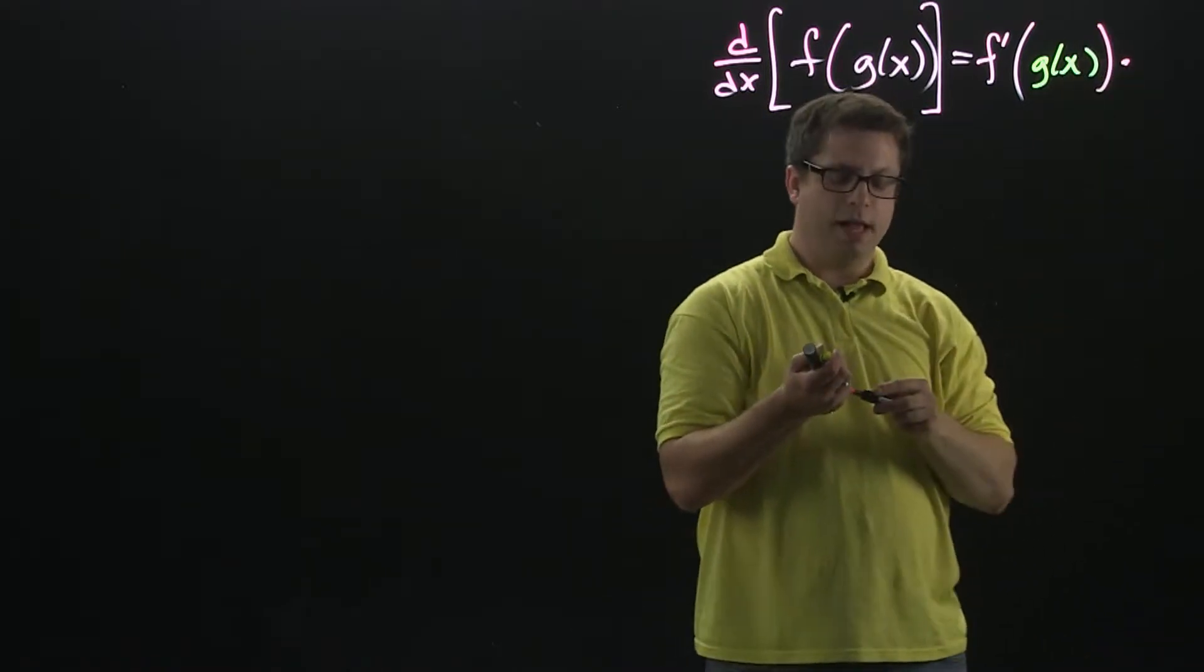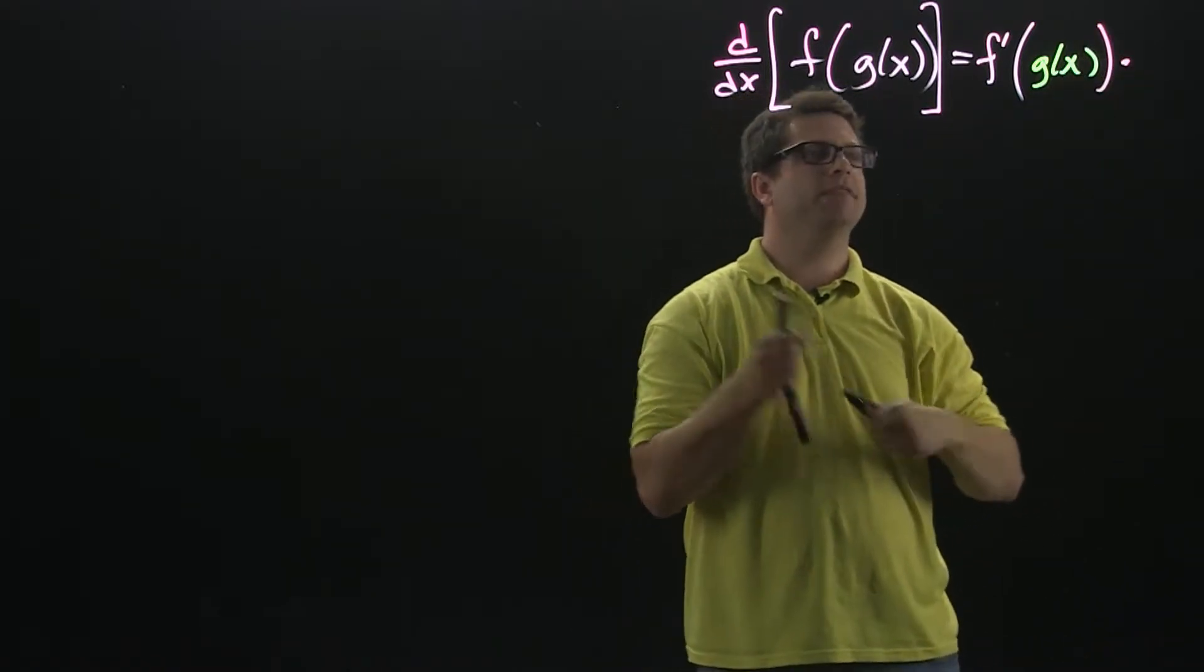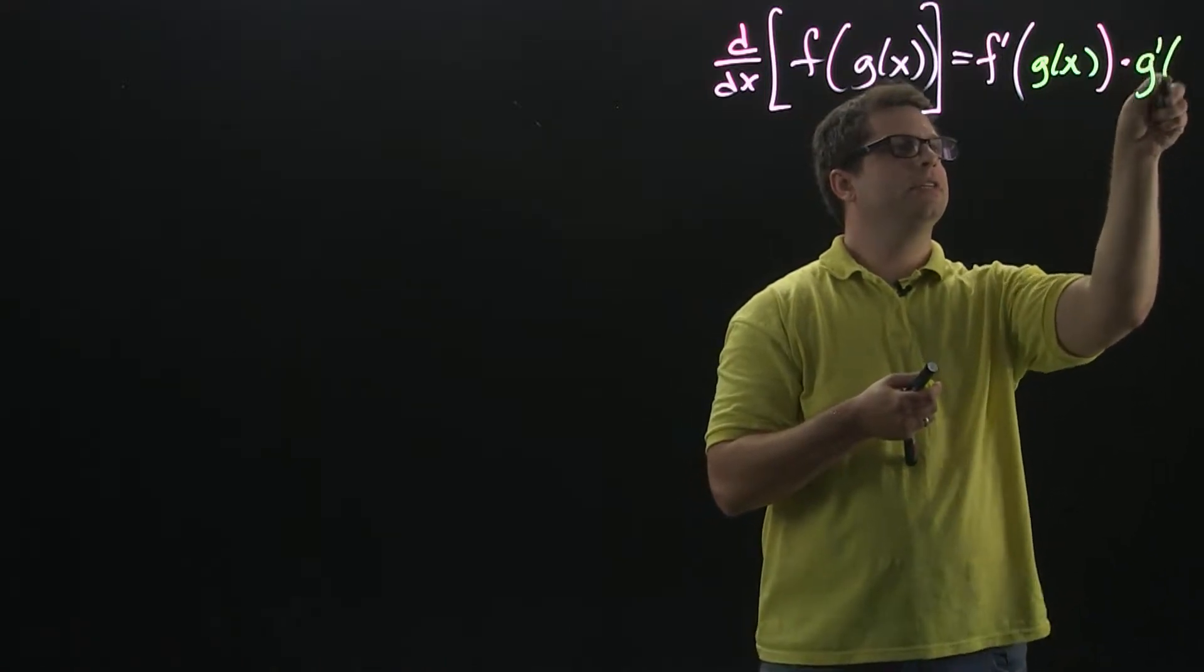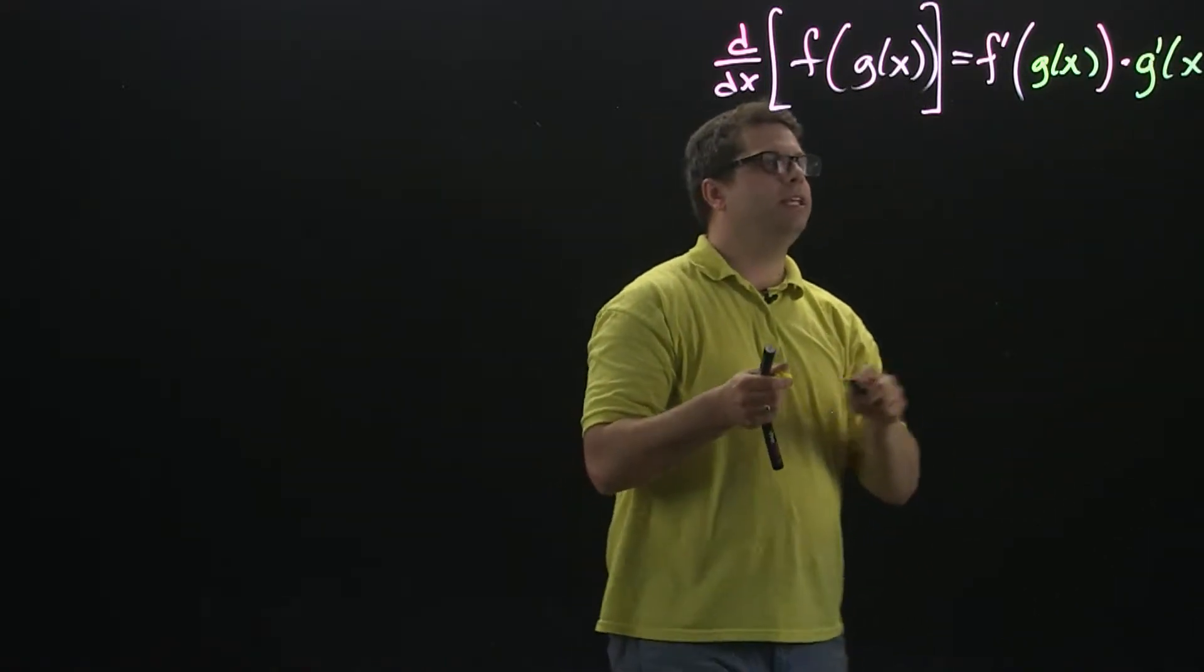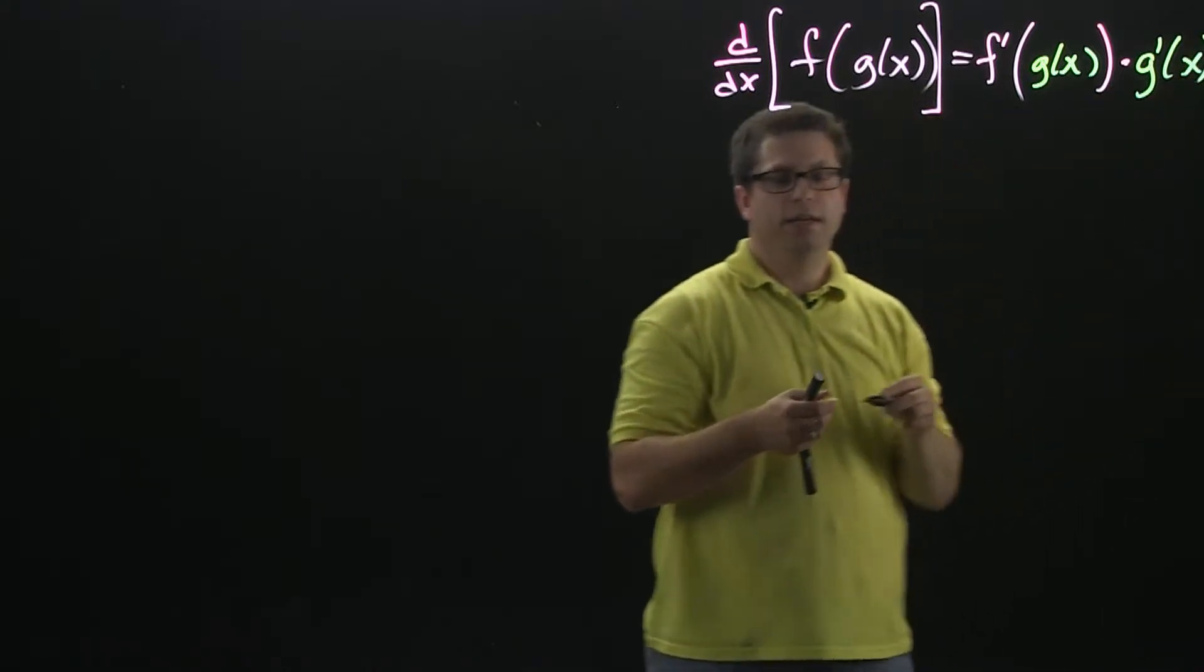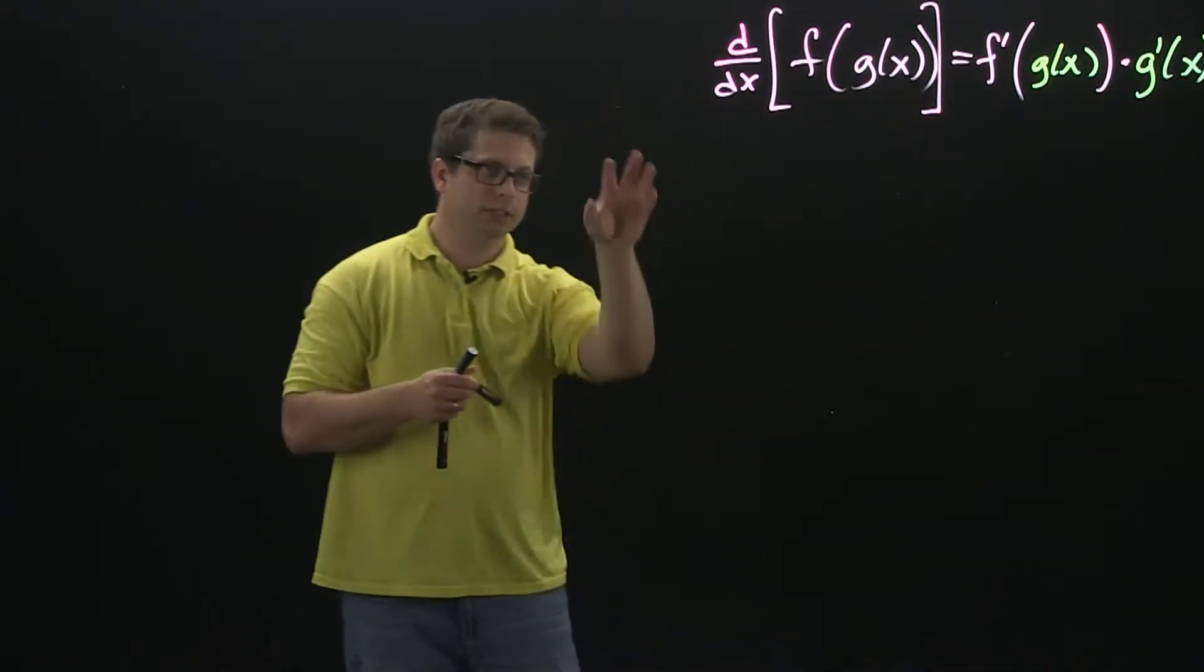And then you multiply by the derivative of the inside function, which in this case is g prime. So the chain rule is how we deal with differentiating functions that are composition of functions.